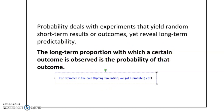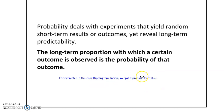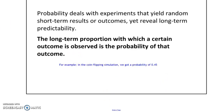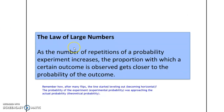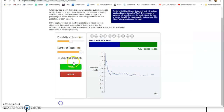In the coin flipping simulation, the experimental probability of getting heads was 0.45. That is the experimental probability for that experiment or simulation. If we were to do another simulation, we might get something similar but not exactly that. So experimental probability can change depending on what the experiment looked like. The law of large numbers is what we saw — the probability got closer and closer to 0.5.